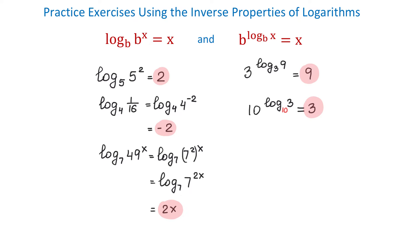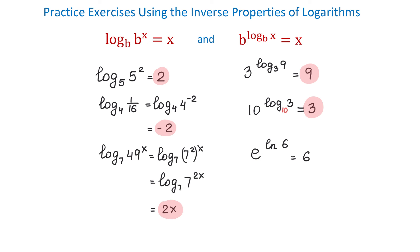In the next example, we will evaluate e to the natural logarithm of 6. The natural logarithm is a logarithm that has the base e. Then, if this is base e and this is also base e, then the result will be 6. So, e to the power of the natural logarithm of 6 equals 6.